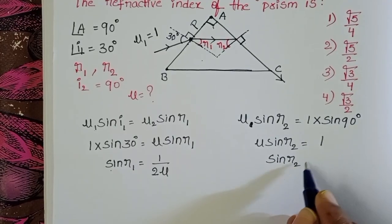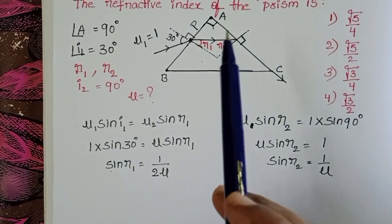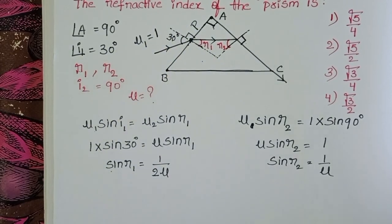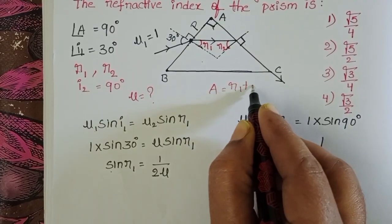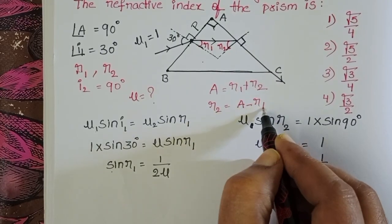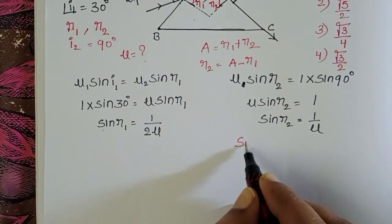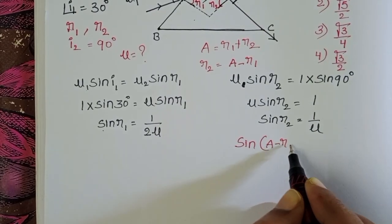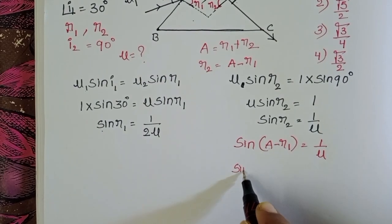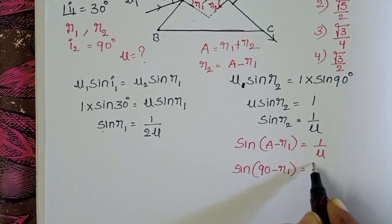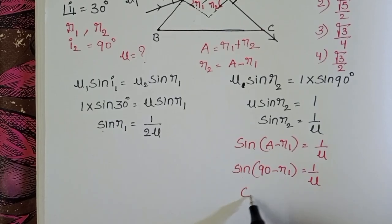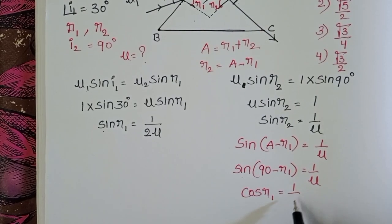From the prism geometry, we know that the angle of the prism A = R1 + R2. Since A = 90°, we get R2 = 90° − R1. Substituting into sin R2 = 1/μ: sin(90° − R1) = 1/μ. Using the identity sin(90° − θ) = cos θ, we get cos R1 = 1/μ. This is equation 2.